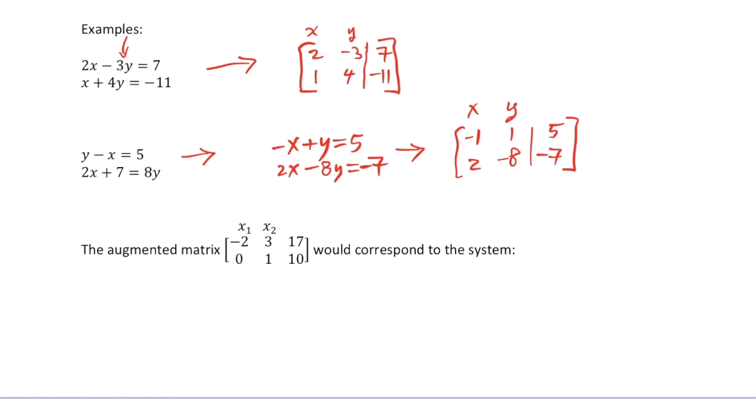Let's go ahead and see. The first row of the augmented matrix would be negative 2, 3, 17. So that would be negative 2x₁ plus 3x₂ equals 17. And the next row would be 0x₁ plus 1x₂ equals 10.